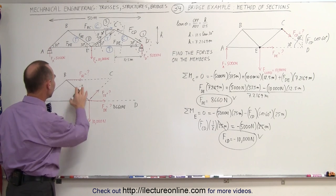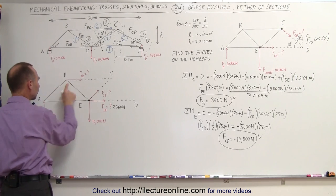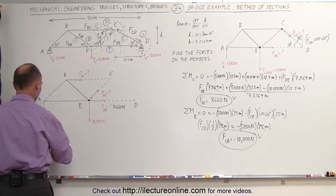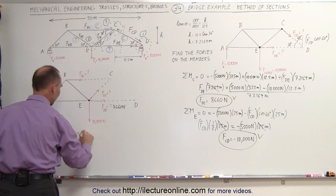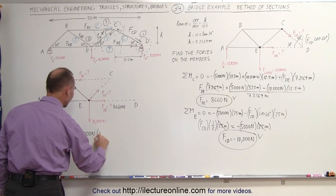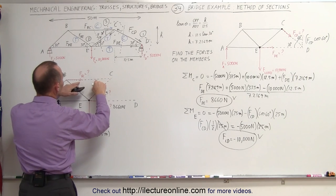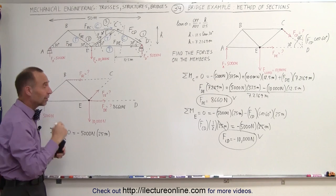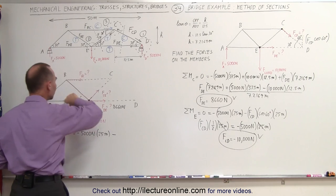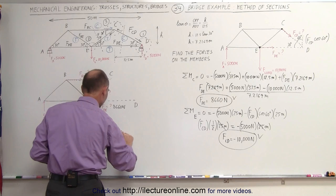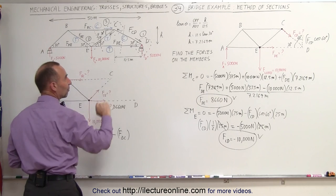Let's start out by finding FBC. To find FBC, I'm going to put my pivot point right there, which eliminates all these forces and only leaves this force and that force. The sum of the moments about point E must equal zero. This gives us a clockwise moment — that's a negative moment — minus 5,000 Newtons times this distance, which is 25 meters. Then we have this force — it's drawn as if it's a force of tension, but we know it's a force of compression, so we expect a negative answer. Because it gives us a clockwise moment, it's minus FBC times the perpendicular distance H, which is 7.2169 meters.